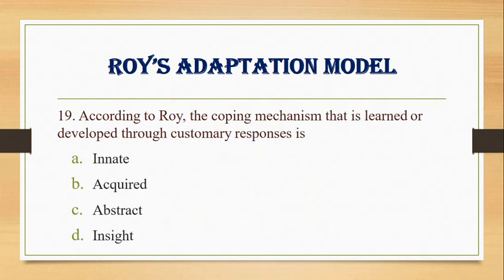Number 19. According to Roy, the coping mechanism that is learned or developed through customary responses is: A. Innate, B. Acquired, C. Abstract, D. Insight. Answer: B. Acquired. The coping mechanism learned or developed through customary responses is acquired.